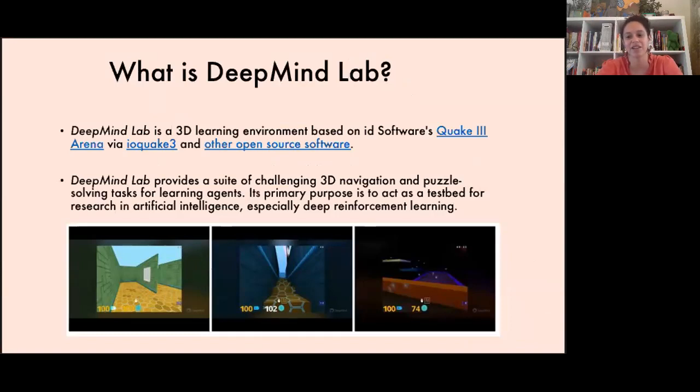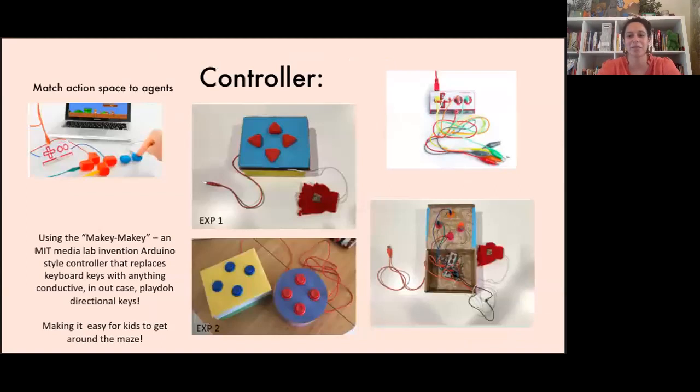Here we have modified it so that it allows us to directly compare the exploration behavior of human children and artificial agents. This allows us to compare with exactly the same observations and maps. Moreover, this allows us to restrict the action space in DeepMind Lab to four simple actions: forward, backwards, turn left, and turn right, using these custom controllers that I built using Arduinos in the lab that make it easier for children to navigate around.